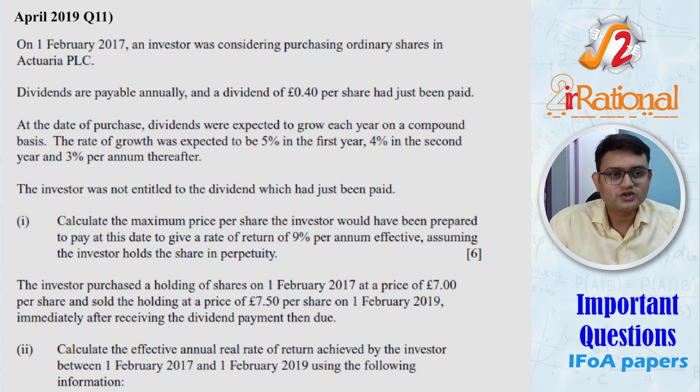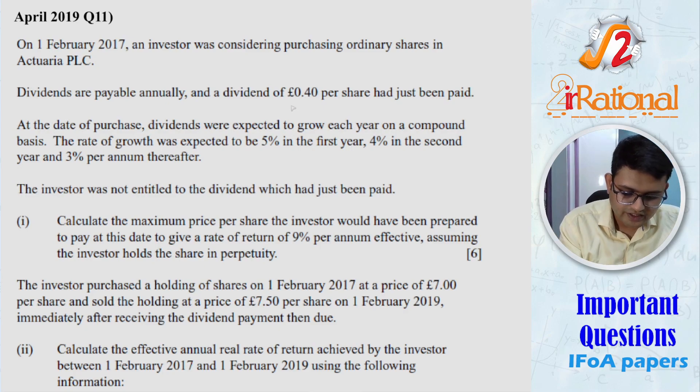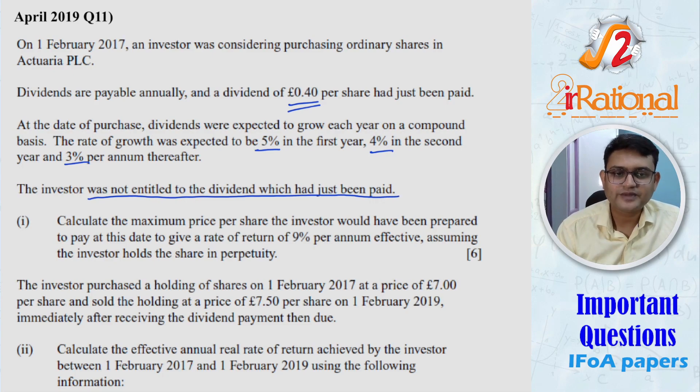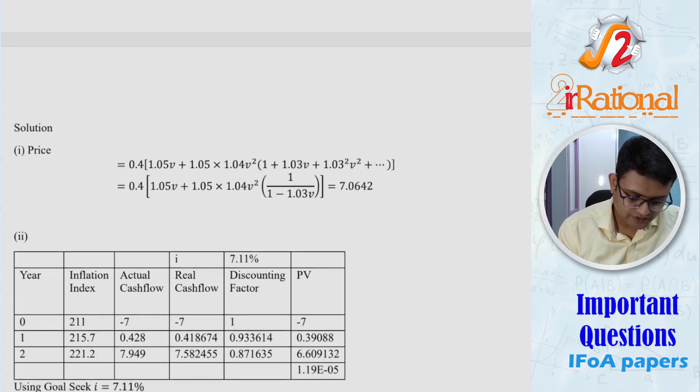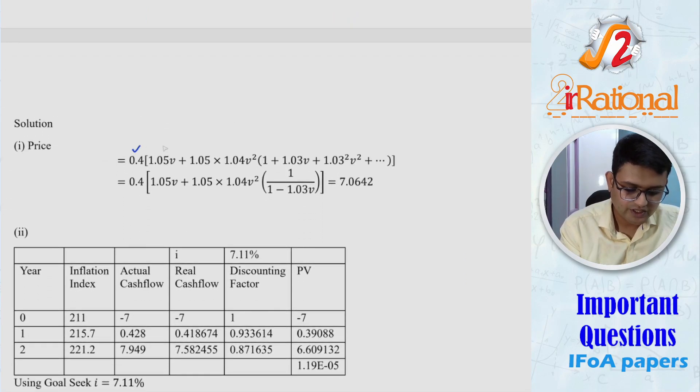Now let's go to the next question. This question is April 2019, question number 11. This is a very straightforward, simple question, not very difficult. They are talking about a share where dividend is 0.4 per share that has just been paid. The growth of the dividend is expected to be 5% in the first year, 4% in the second year, 3% in the years after that. And they are saying investor was not entitled to the dividend which has just been paid. You have to calculate the maximum price. So this was very straightforward.